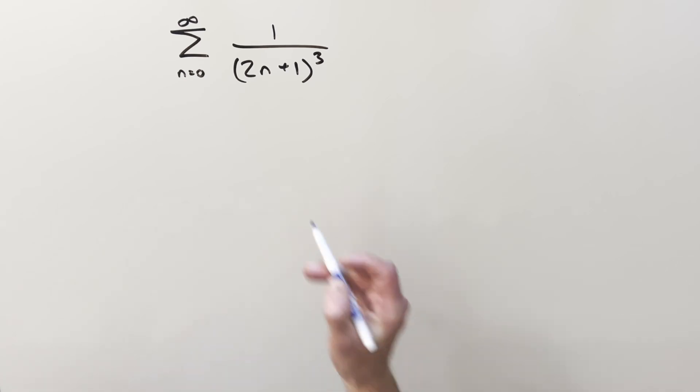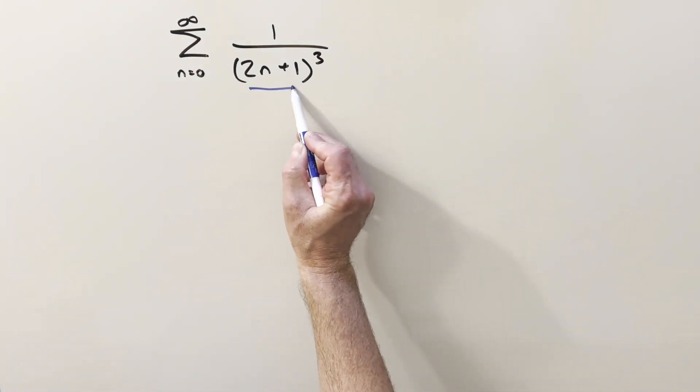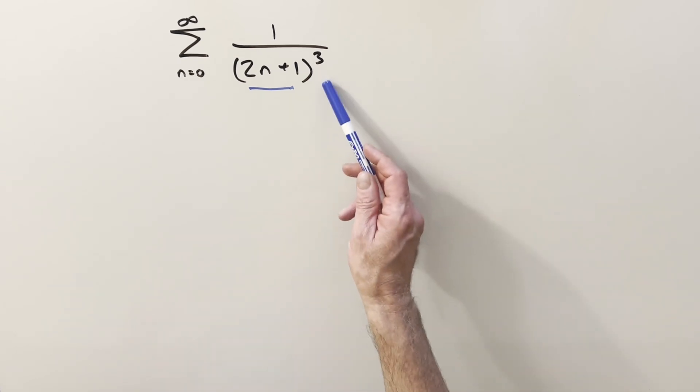The first thing to notice is that 2n+1 is always an odd number. And with something cubed, we don't have to worry about convergence. This thing's definitely going to converge.